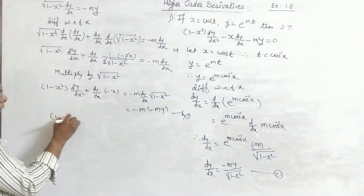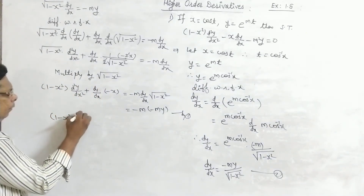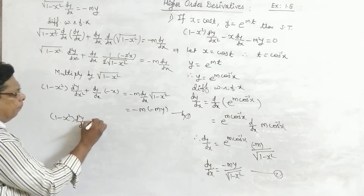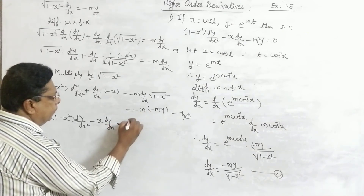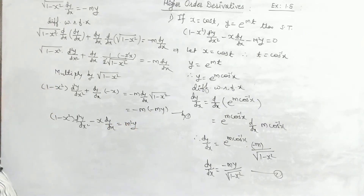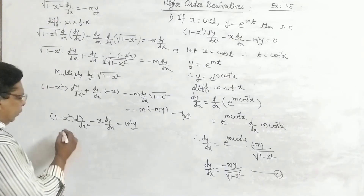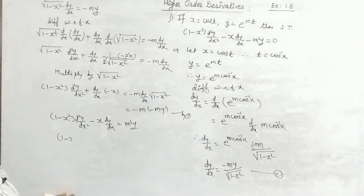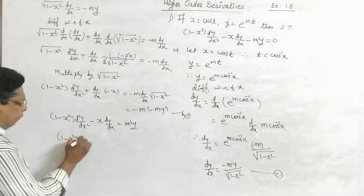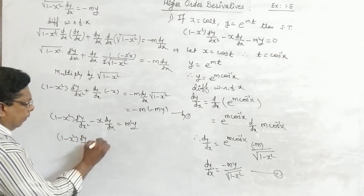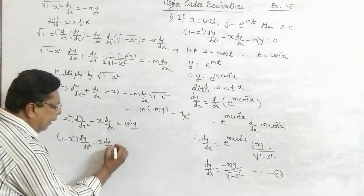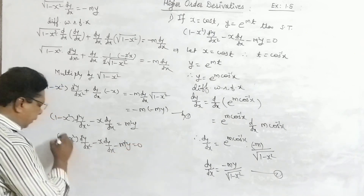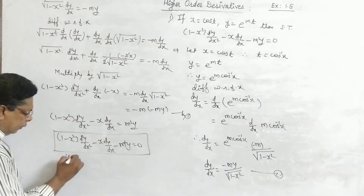(1 − x²) · d²y/dx² minus x · dy/dx equals m²y. Rearranging: (1 − x²) · d²y/dx² minus x · dy/dx minus m²y equals 0. Hence the proof is complete.